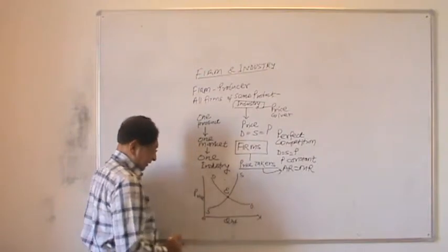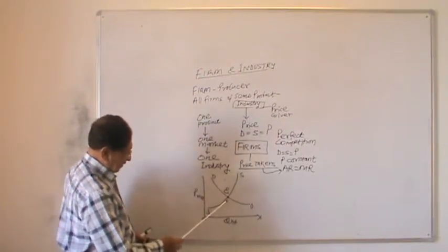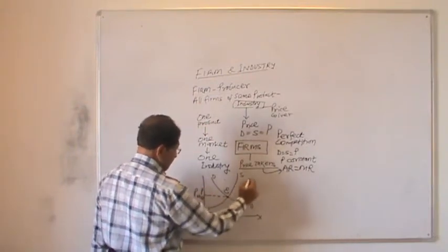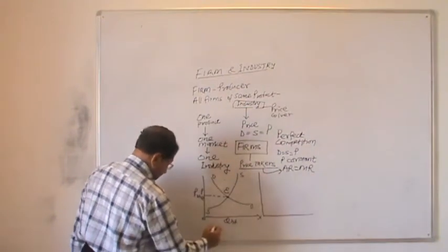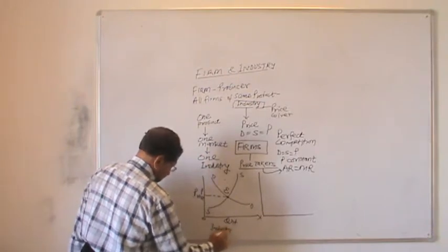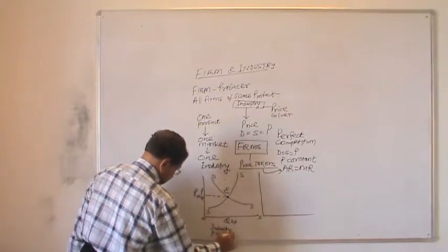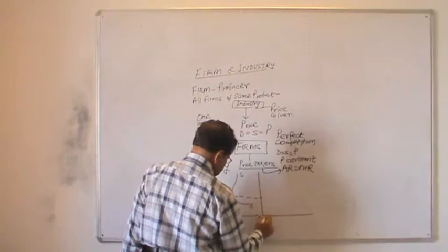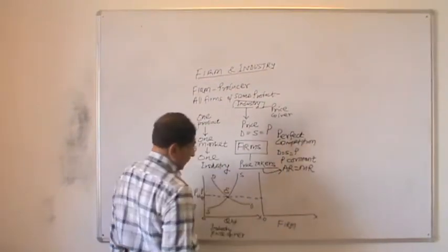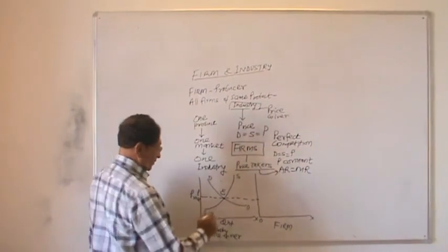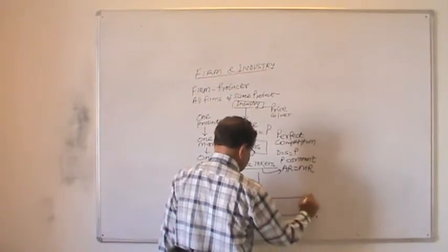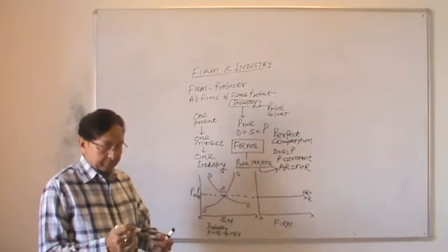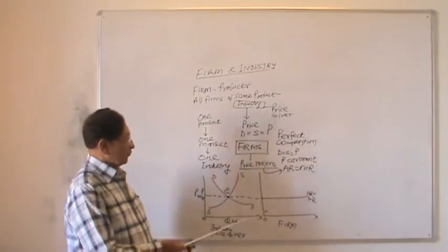This is the equilibrium point E, where demand and supply intersect each other. Therefore, price OP is determined. This price is given by the industry — that is why we say that industry is a price giver. At this price, accepted by the firm, the firm has no choice in the case of perfect competition. The firm will accept this price, and at this price, average revenue is equal to marginal revenue.